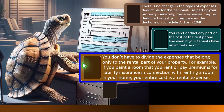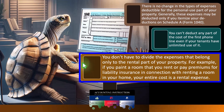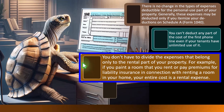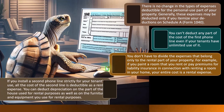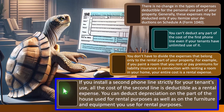You don't have to divide expenses that belong only to the rental part of your property. For example, if you paint a room that you rent, or pay premiums for liability insurance in connection with renting a room in your home, your entire cost is a rental expense. But if you painted the entire home, you would have to allocate it between personal and business. If you install a second phone line strictly for your tenants' use, all the cost of that second line is deductible as a rental expense.